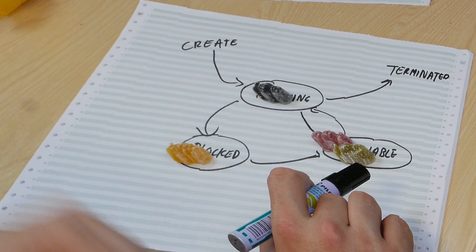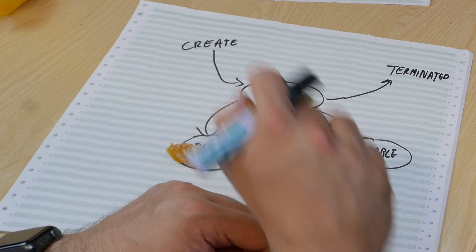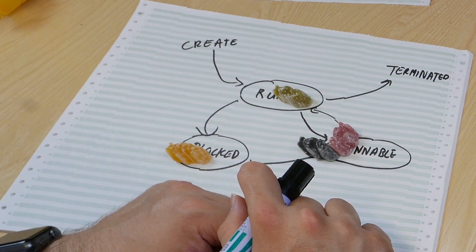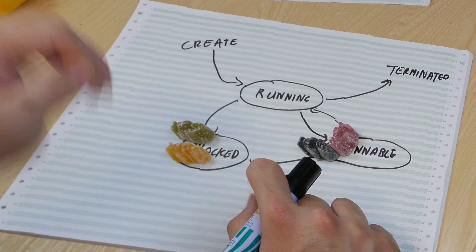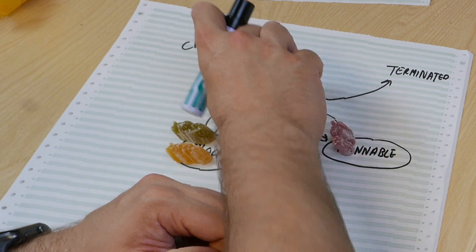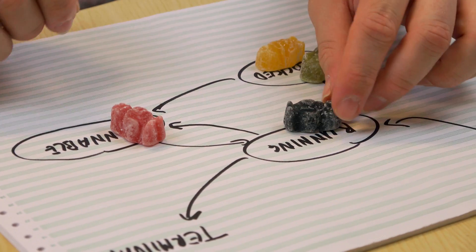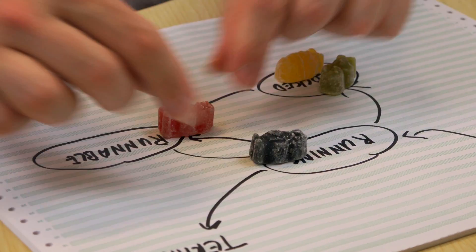So we can bring another process in, and what will happen is that every time we switch processes, we move one from running into runnable, or back into running — or occasionally a process will call the operating system. So we get them switching as the regular interrupts happen, and processes keep running until they finish.